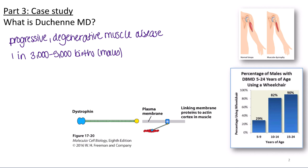Looking at figures on this page, on the left we have an image showing a normal bicep versus the bicep of a patient with muscular dystrophy. The affected bicep is elongated and not as large — we see the breakdown of muscles over time. Looking at the percentage of males using a wheelchair with increasing age, by the time most patients reach adulthood, about 90% have to use a wheelchair.